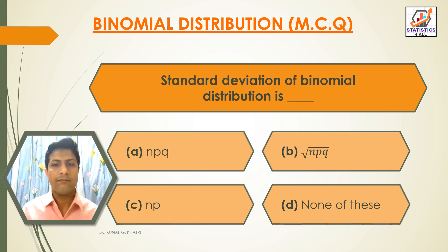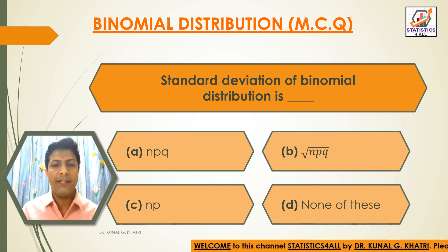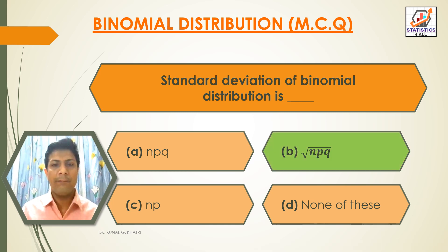Next question: Standard deviation of binomial distribution is dash. Option A: npq. Option B: under root npq. Option C: np. Option D: None of these. The answer is option B — under root npq. Standard deviation of binomial distribution is √(npq).